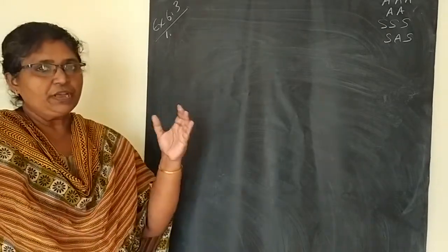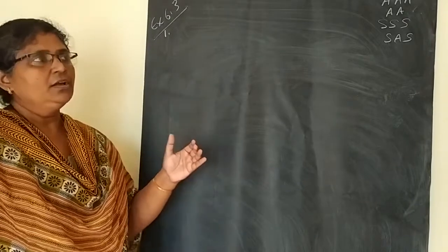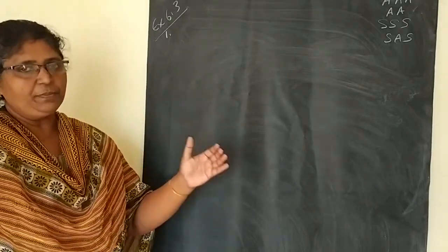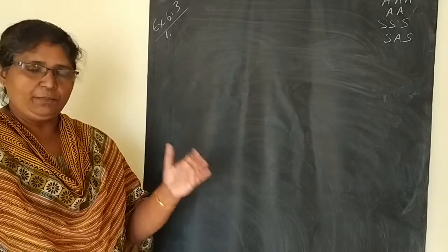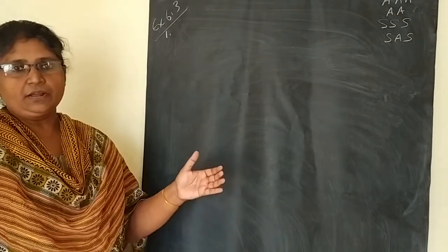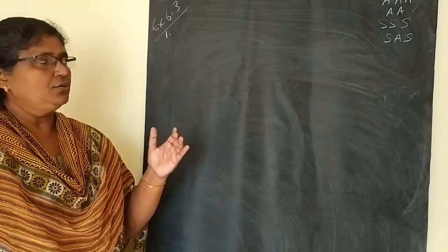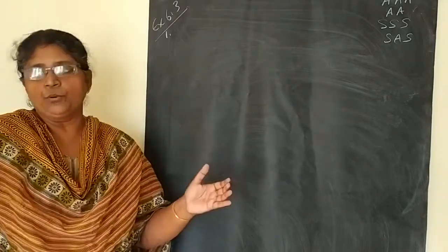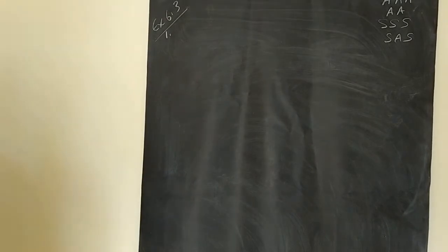There are some pairs of figures given. You have to identify which pairs are similar and why they are similar. And if they are similar, you have to write the symbolic form. So, one by one we will do.